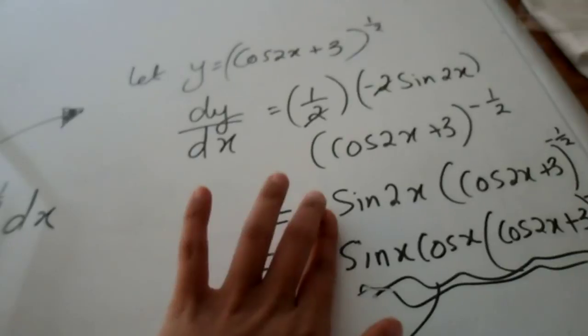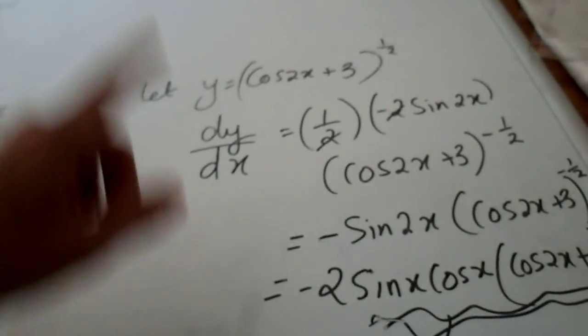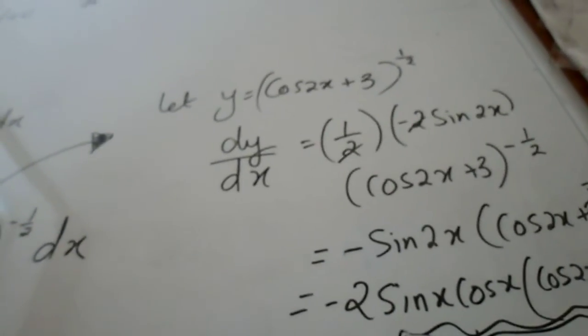But without the minus 2 so if you wanted to get rid of the minus 2 all that you'd have to do is just multiply the answer by minus half.